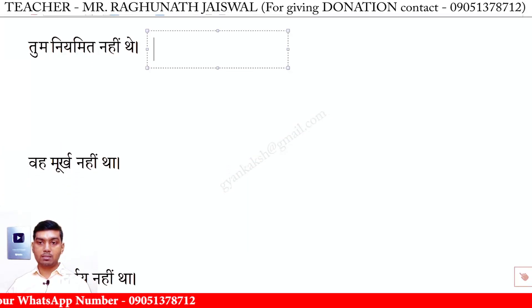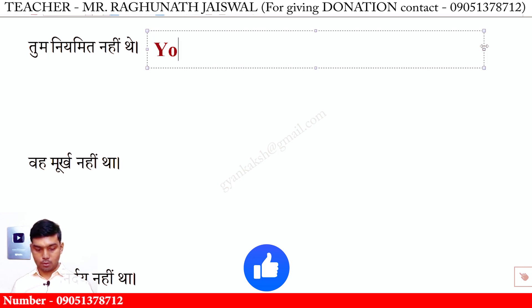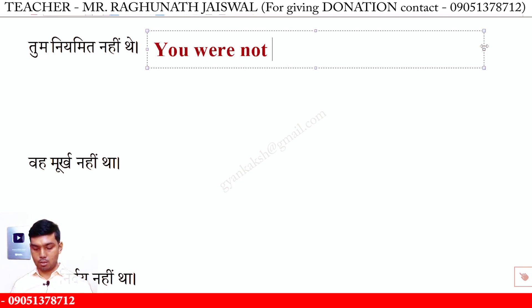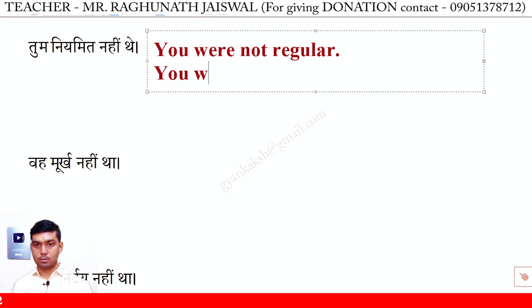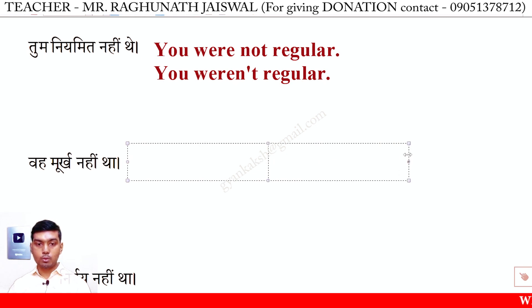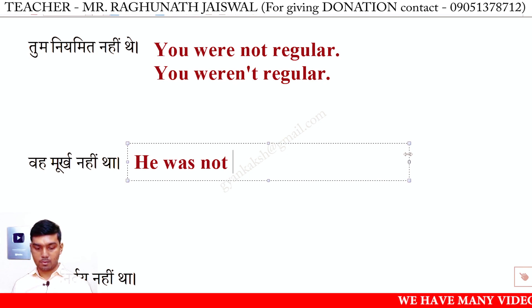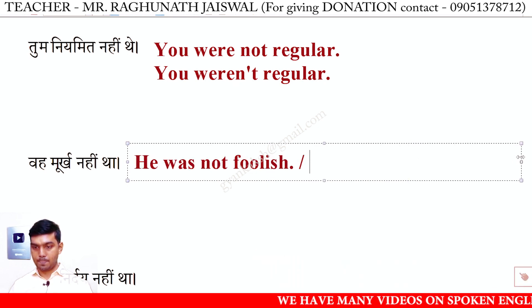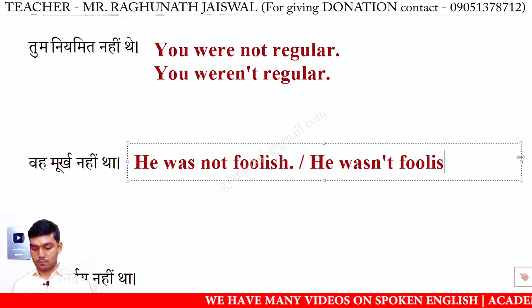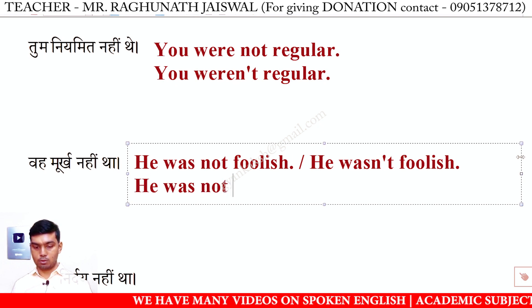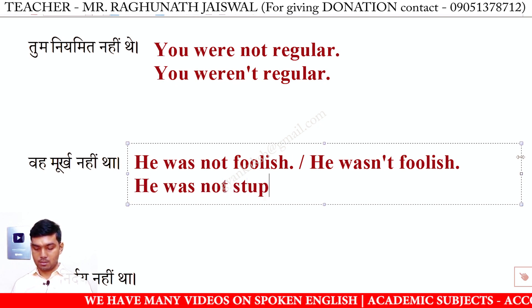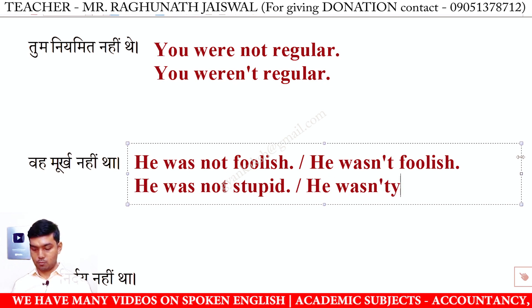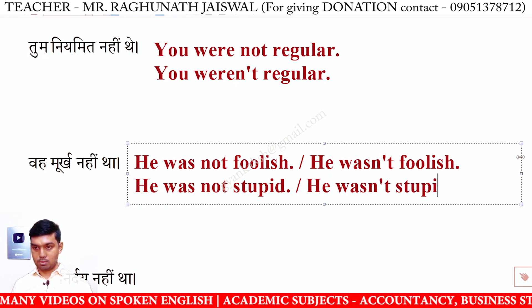Tum niyamit nahi thay — You were not regular. Short form: you weren't regular. Vah murkh nahi tha — He was not stupid. Short form: he wasn't stupid.